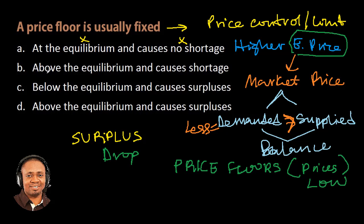Option B: above the equilibrium — yes — and causes shortage — that is not correct.